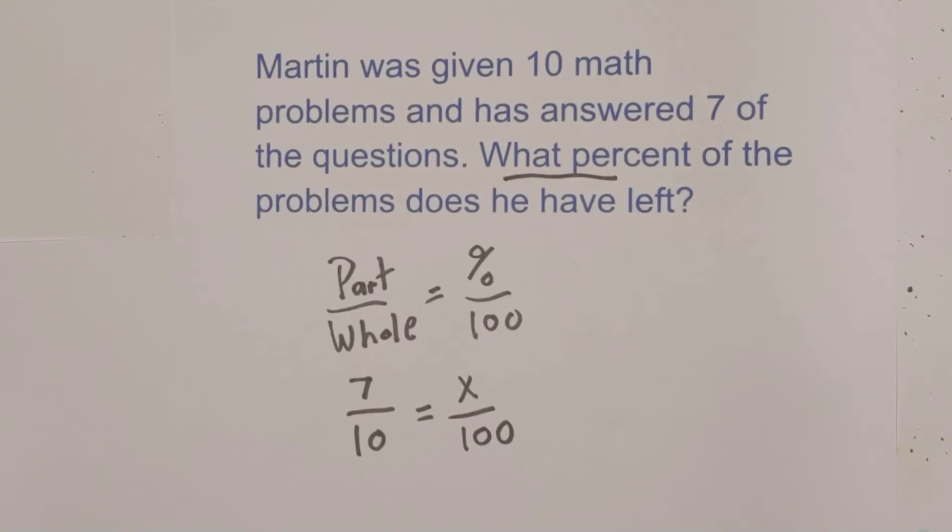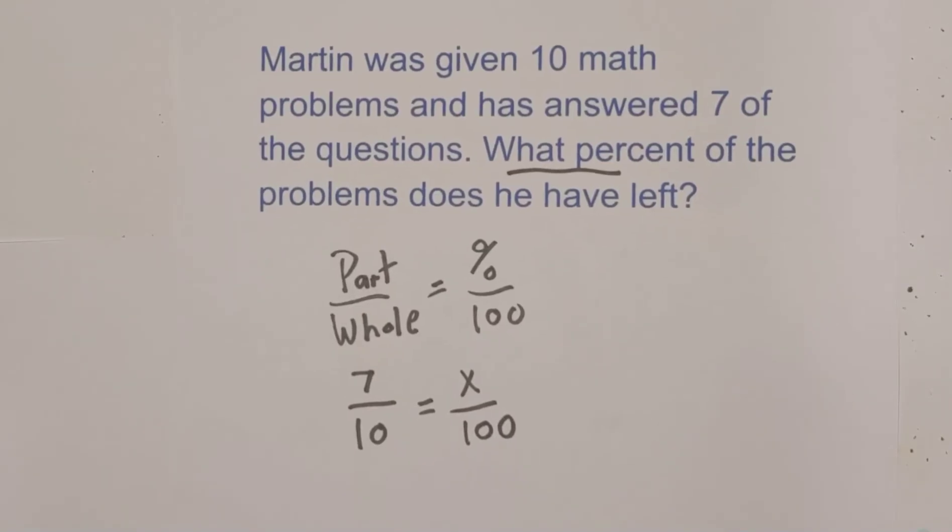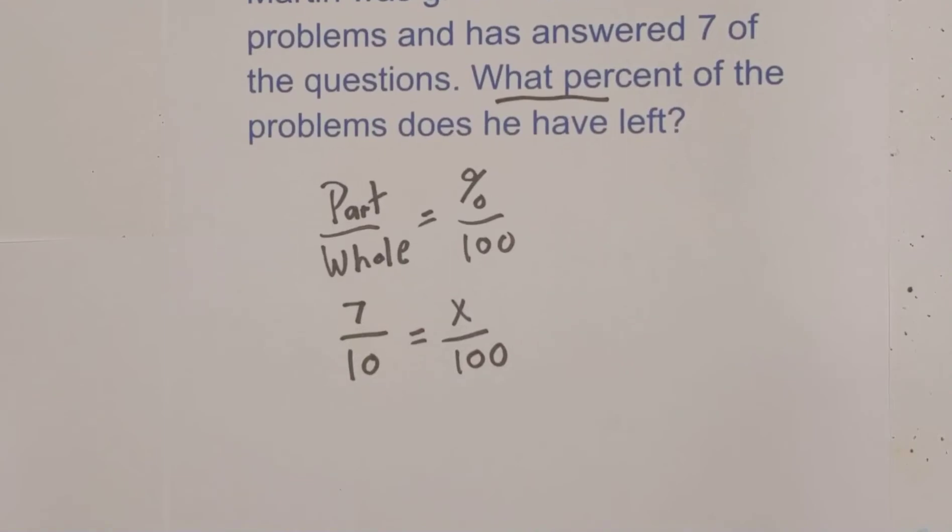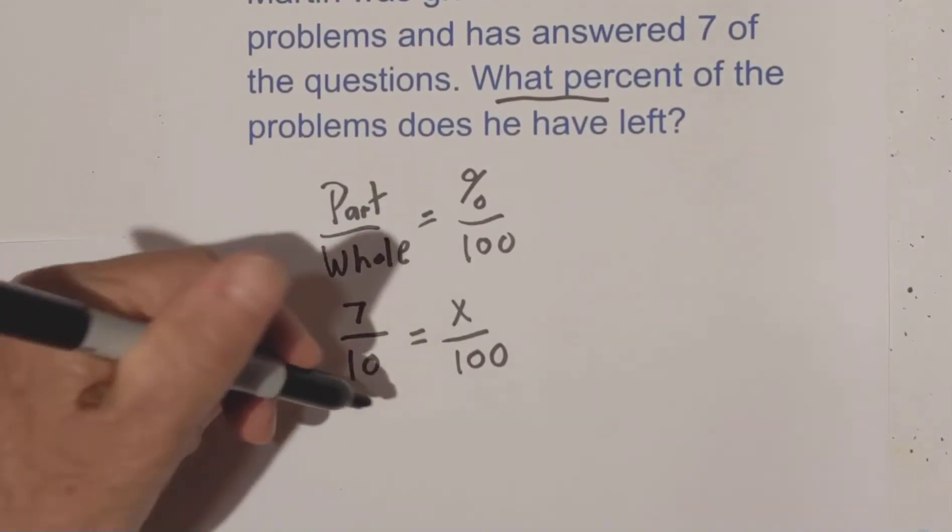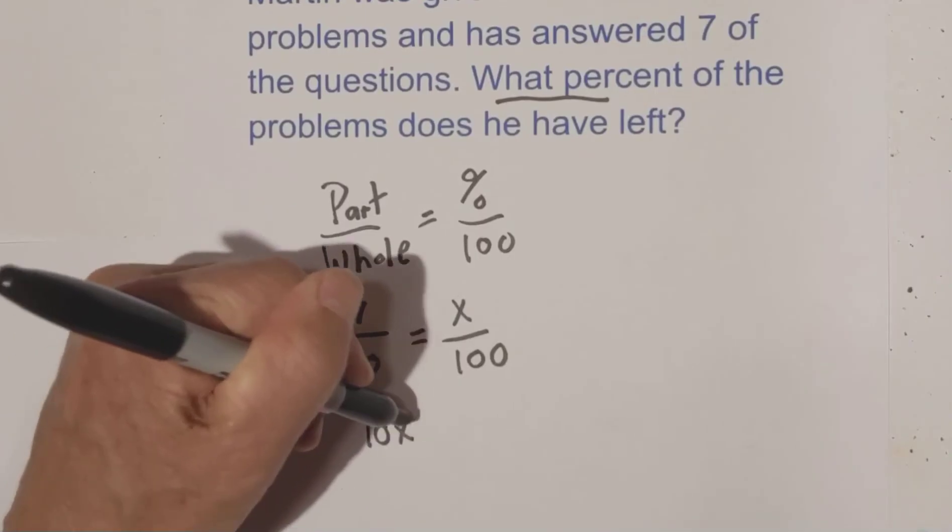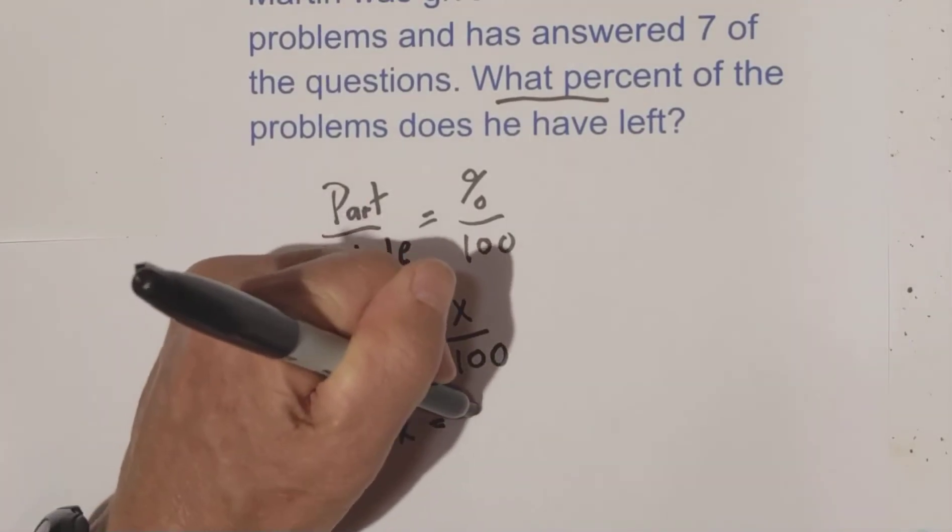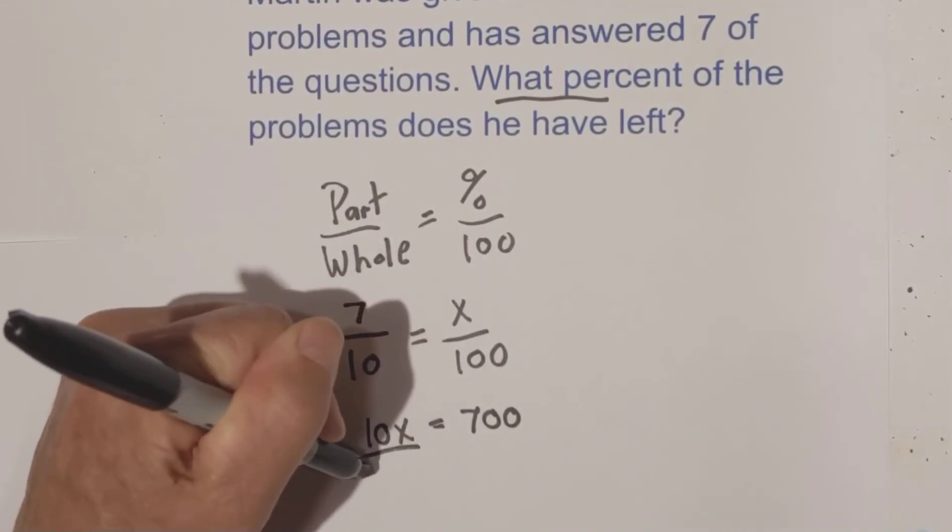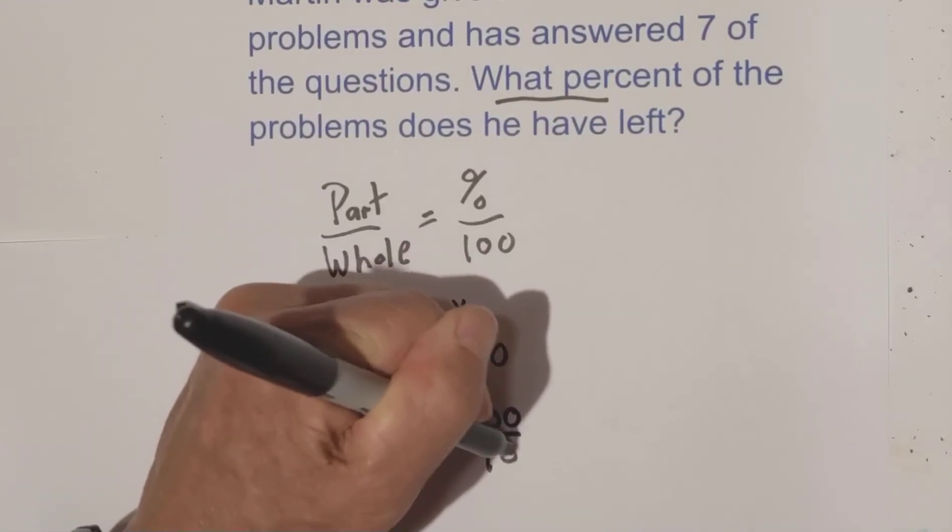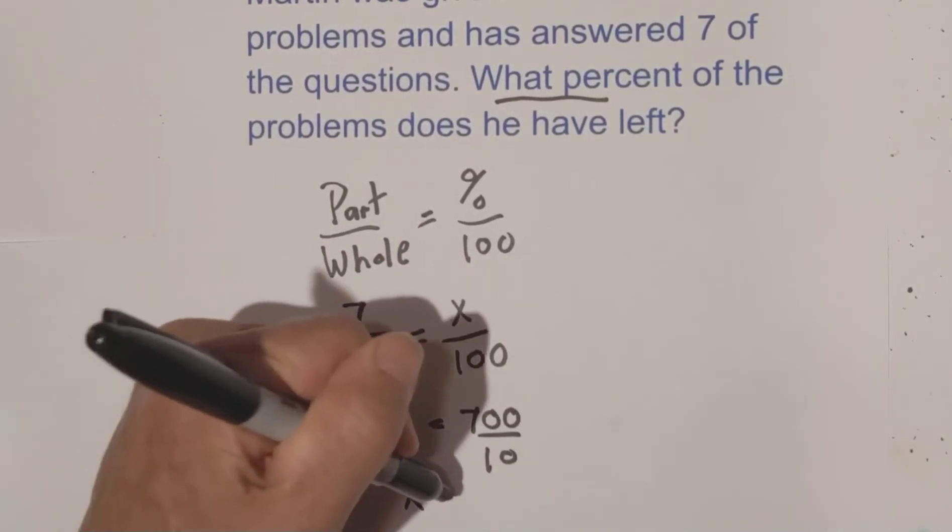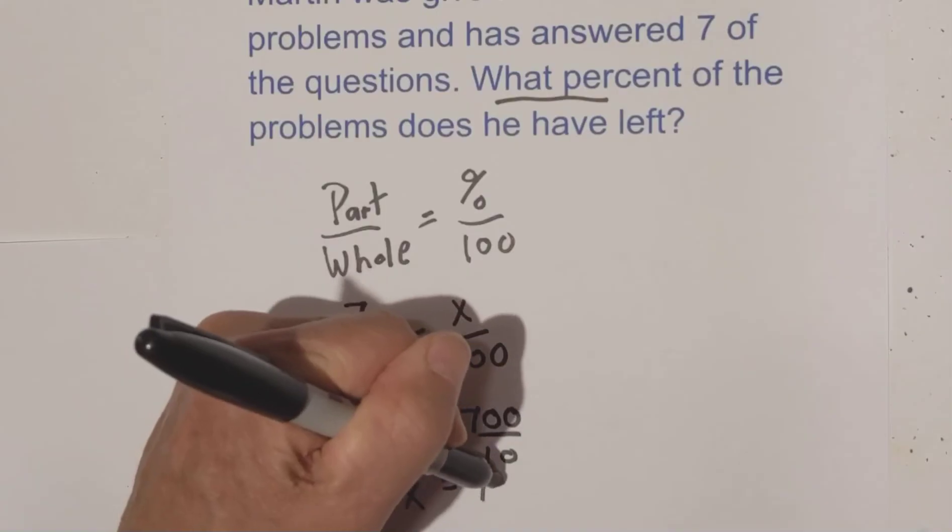Then all you do is cross multiply and then solve for x. I'm going to move it up a little bit more. So x times 10 is 10x is equal to 7 times 100 is 700. Solve for x, divide both sides by 10.